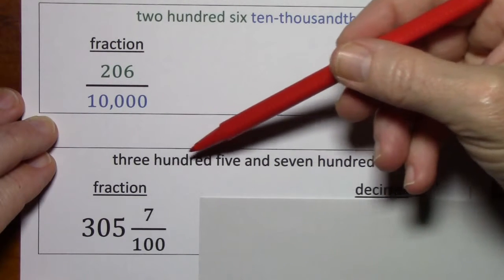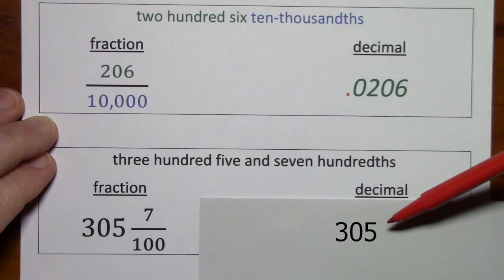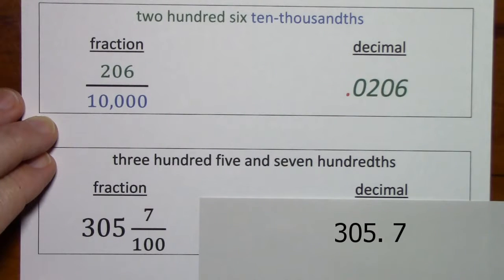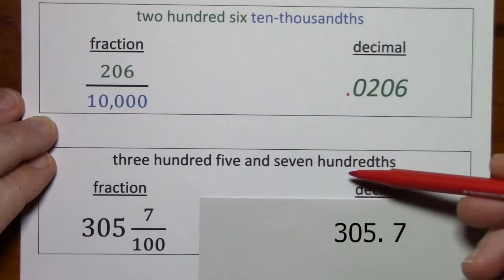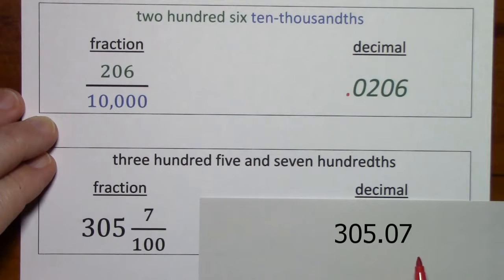We'll do this one more time going from the word to the fraction and also the decimal. Three hundred five and seven hundredths. The word 'and' indicates the decimal point or the beginning of a fraction. So we have three hundred five, and seven hundredths. For the decimal, you first write three hundred five, a decimal point, then the number seven — and for hundredths, you have to make sure you have two decimal places.